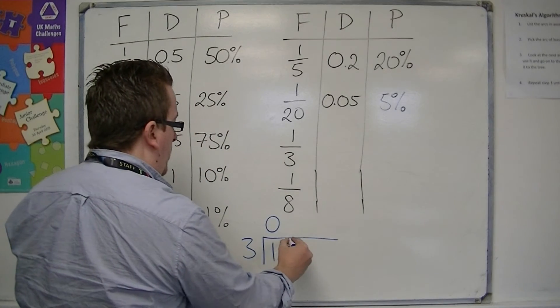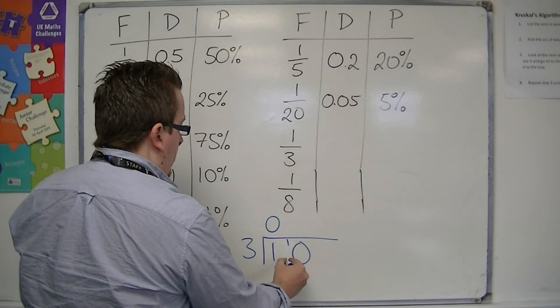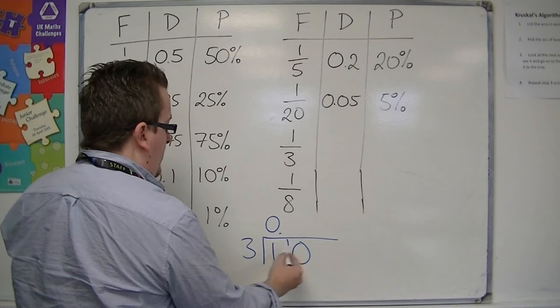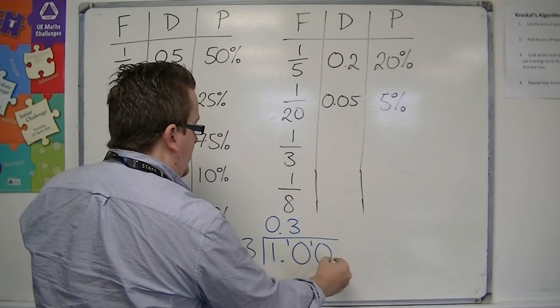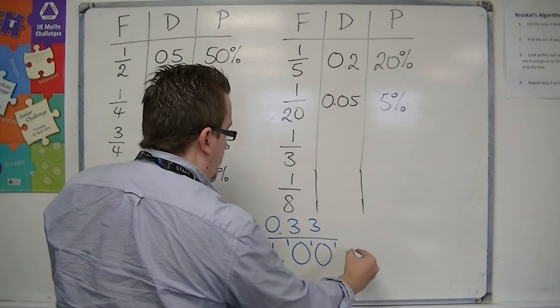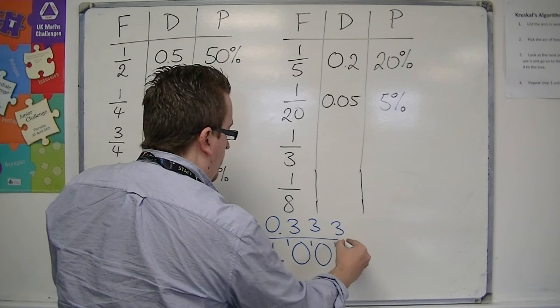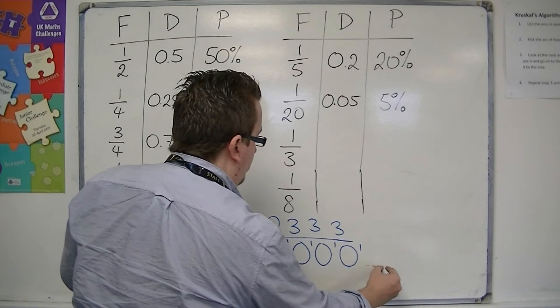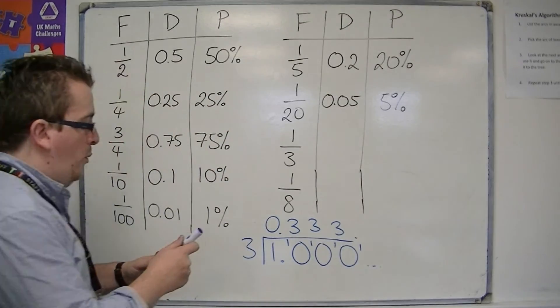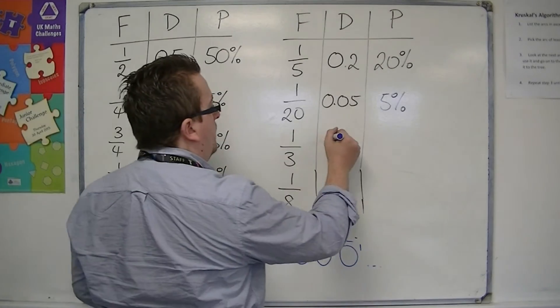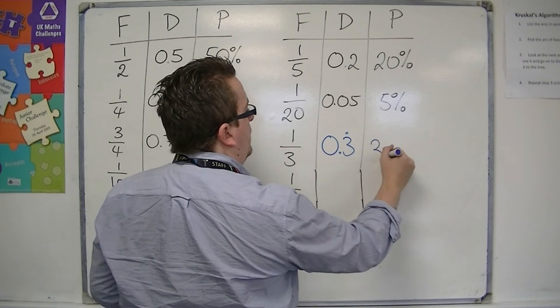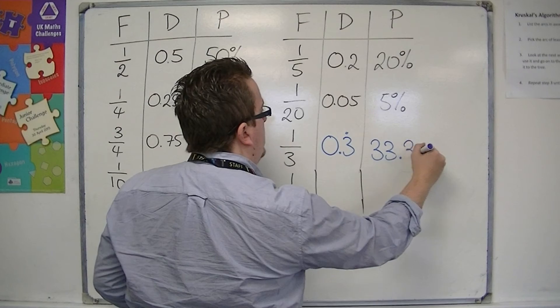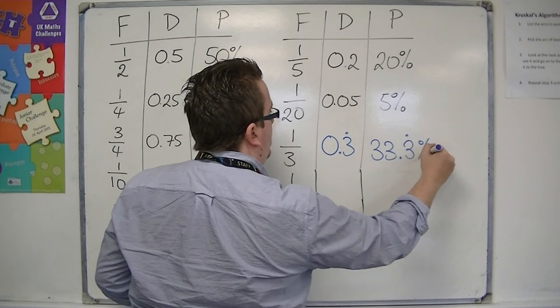3s into 1 go 0, with 1 remainder, bringing in 0. 3s into 10 go 3, with 1 left over. 3s into 10 go 3, with 1 left over. 3s into 10 go 3, with 1 left over, and so on. So, it's 0.3 recurring, which would be 33.3 recurring percent.